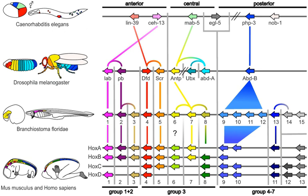A recapitulation theory of evolutionary development was proposed by Étienne Serre in 1824–26, echoing the 1808 ideas of Johann Friedrich Mechel. They argued that the embryos of animals went through or recapitulated a series of stages, each of which resembled an animal lower down the great chain of being. For example, the brain of a human embryo looked first like that of a fish, then in turn like that of a reptile, bird, and mammal before becoming clearly human.